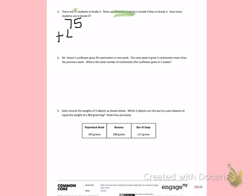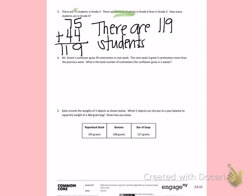75 plus 44. 5 plus 4 is 9. 7 plus 4 is 11. There are 119 students in grade 4.